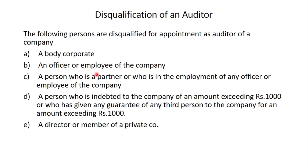Second disqualification: an officer or employee of the company. An officer or employee of the company may be a Chartered Accountant, but because he is working as an officer or employee of that company, he cannot be appointed as an auditor of that company.